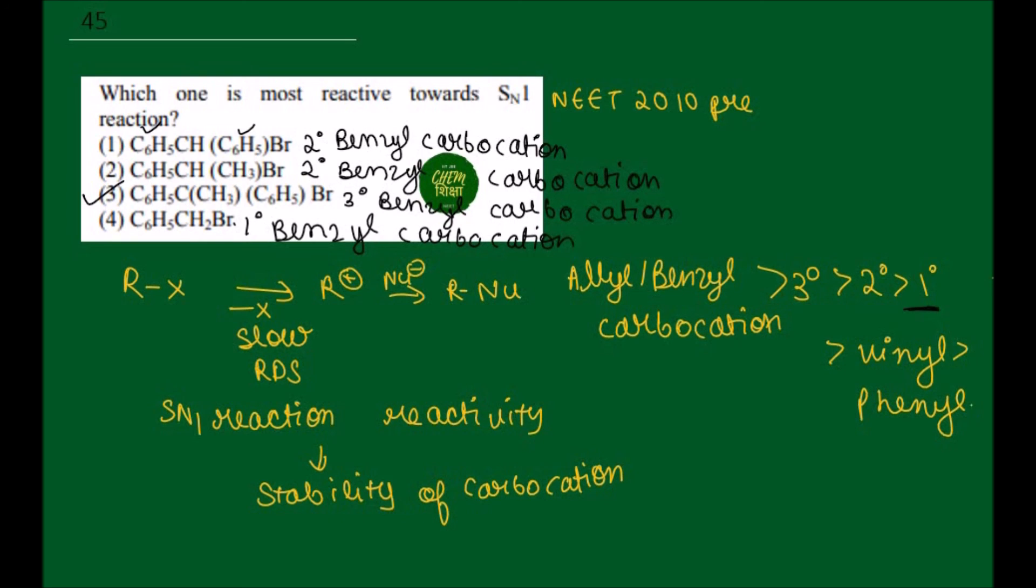So according to this, which one is most reactive towards SN1 reaction? C6H5-C(CH3)(C6H5)-Br is the most reactive towards SN1 reaction. Hence option 3 is the correct option and the required answer for this question. Thanks for watching our channel, please like, share and subscribe.